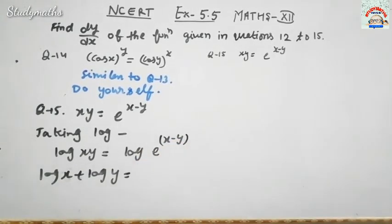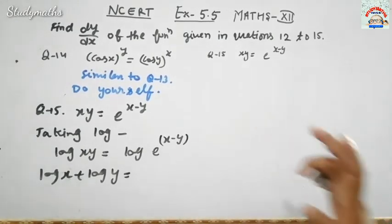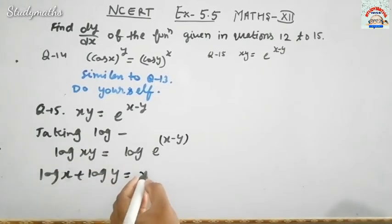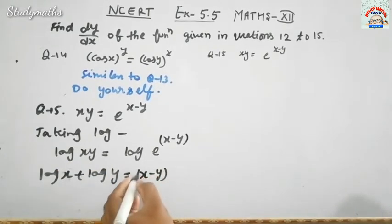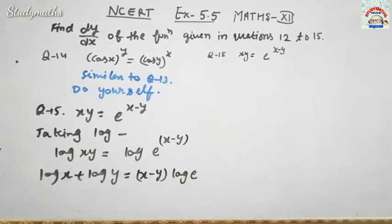We have a property: log M raised to the power N. The property of log M raised to the power N is N log M. So this becomes X minus Y times log e. Log e has a value of 1.